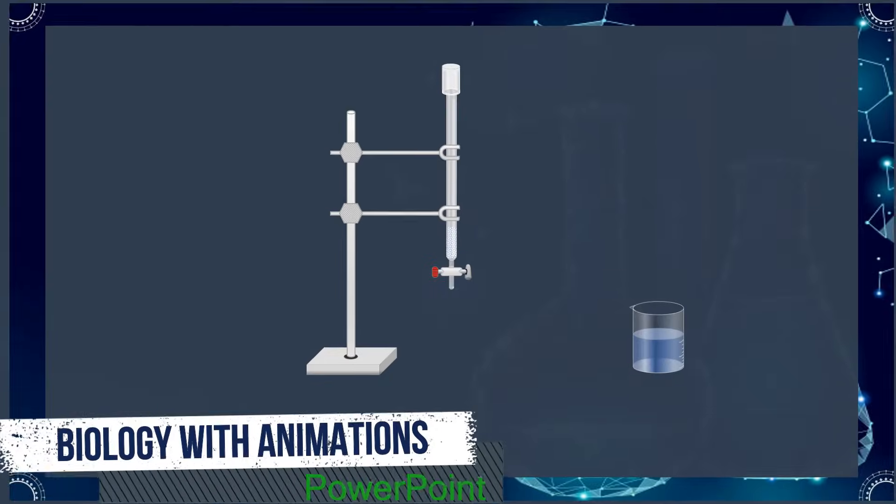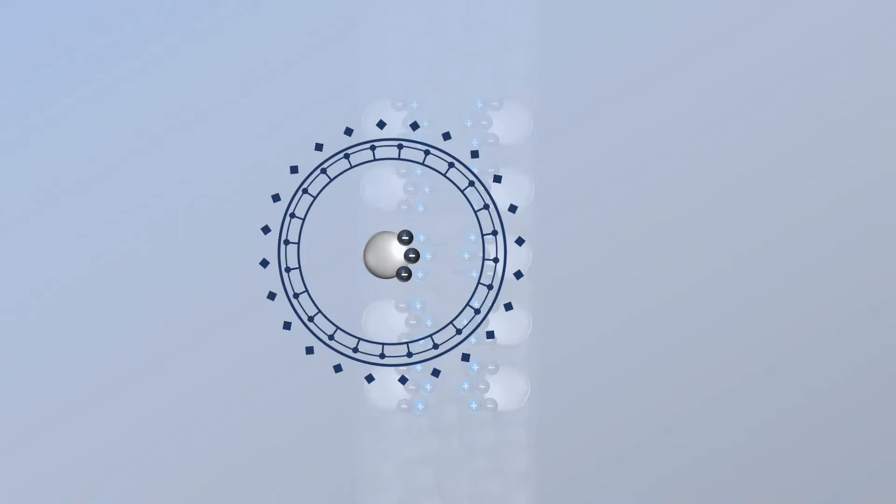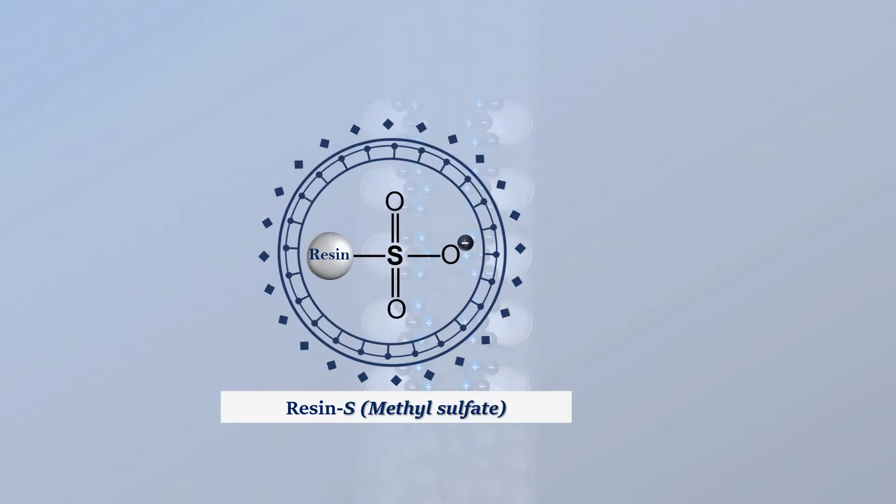In cation-ion-exchange chromatography, positively charged molecules are attracted to negatively charged solid support, which is commonly beads that provide negatively charged functional groups, such as resin methyl sulfate.